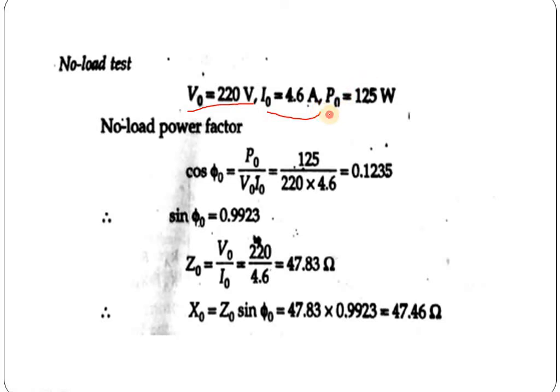Putting all those values in the power equation — we know P equals V·I·cos φ — where V and I values are known from the voltmeter and ammeter readings, we can calculate the power factor at no-load condition. That is, cos φ0 equals P divided by V0 times I0, which becomes 125 divided by 220 times 4.6. The power factor is 0.12.